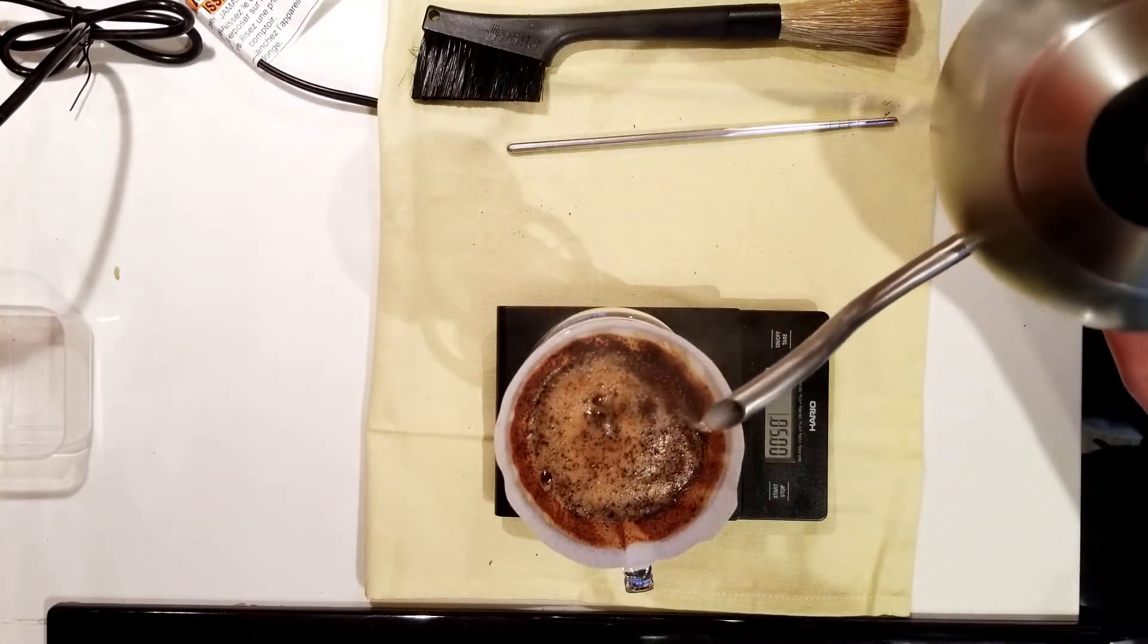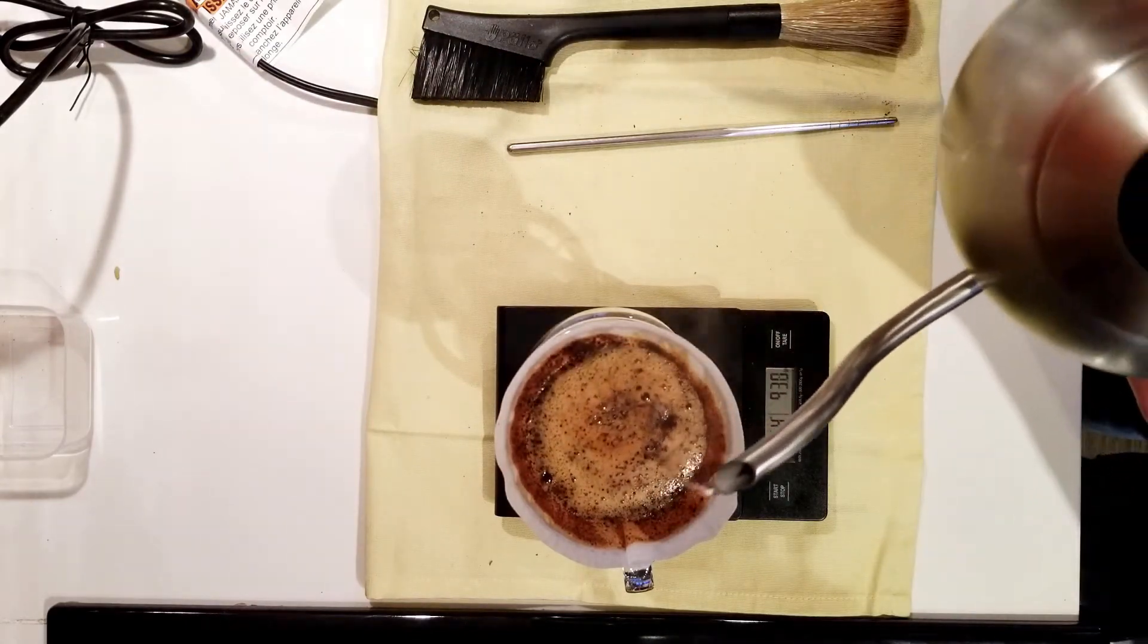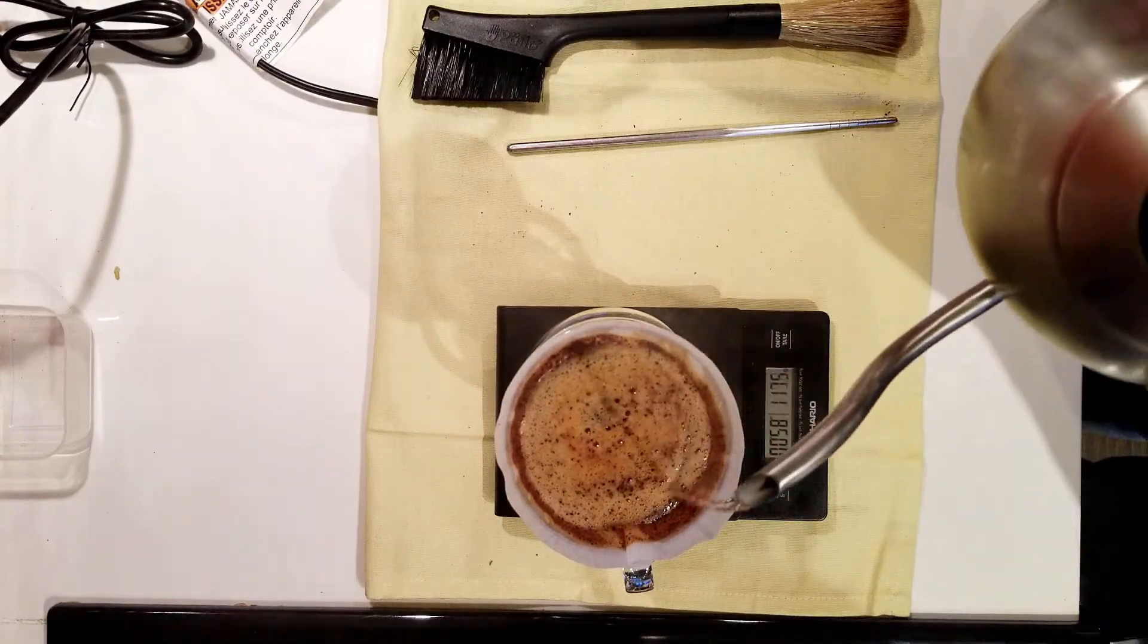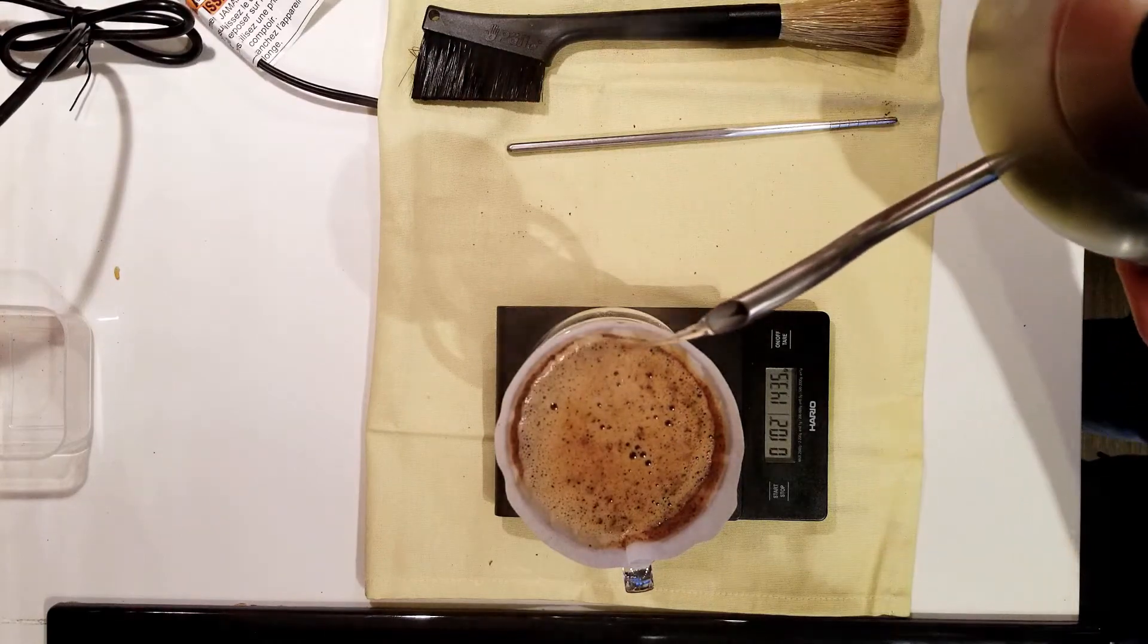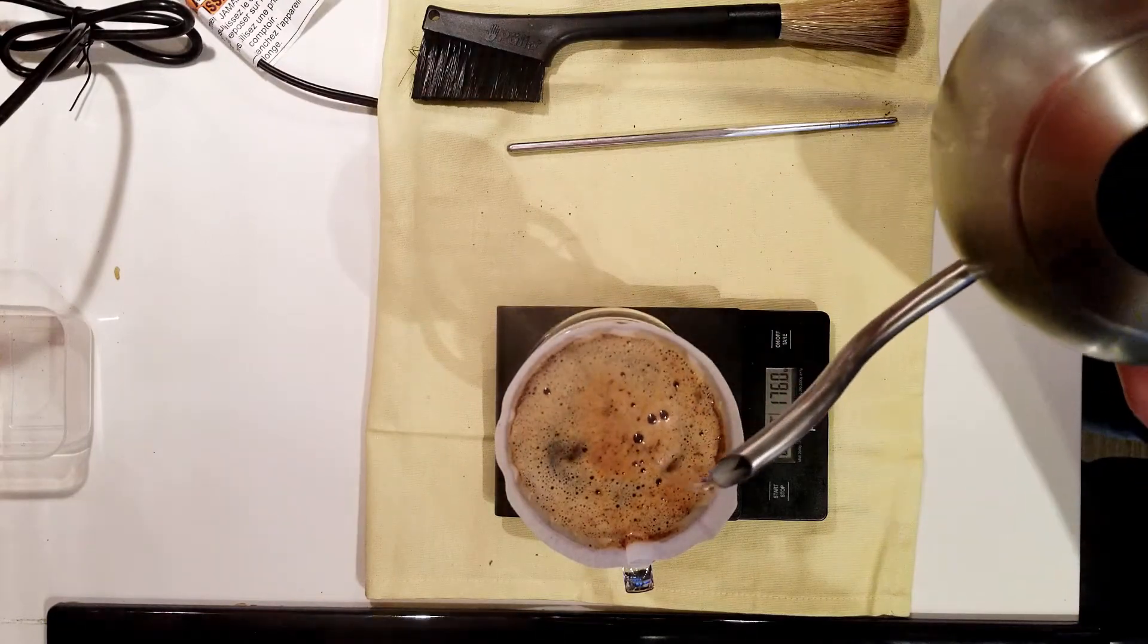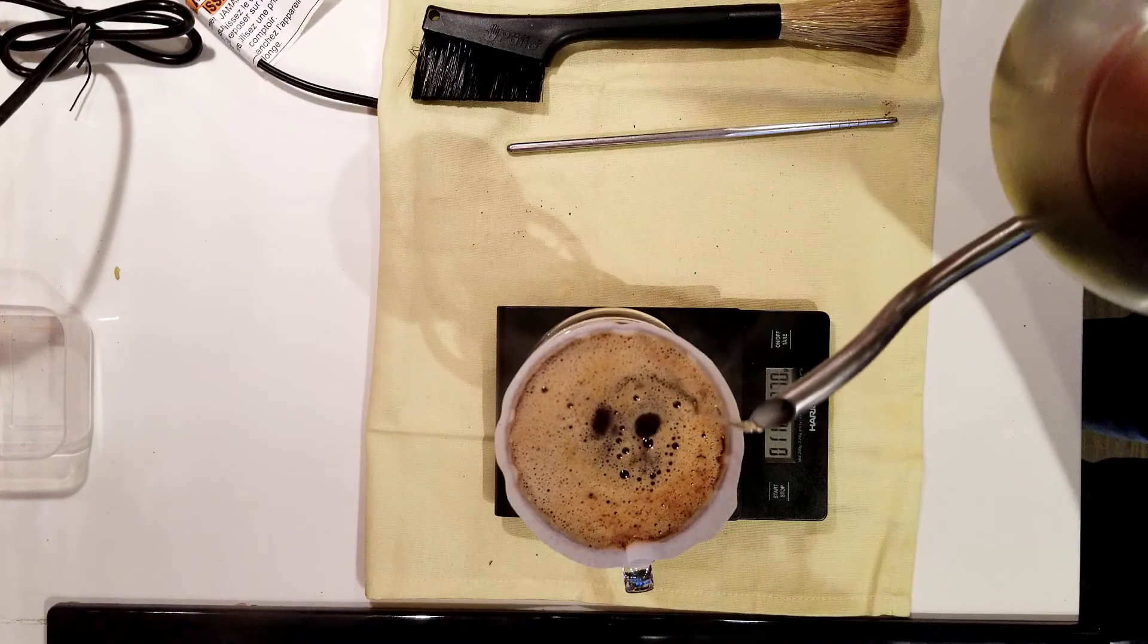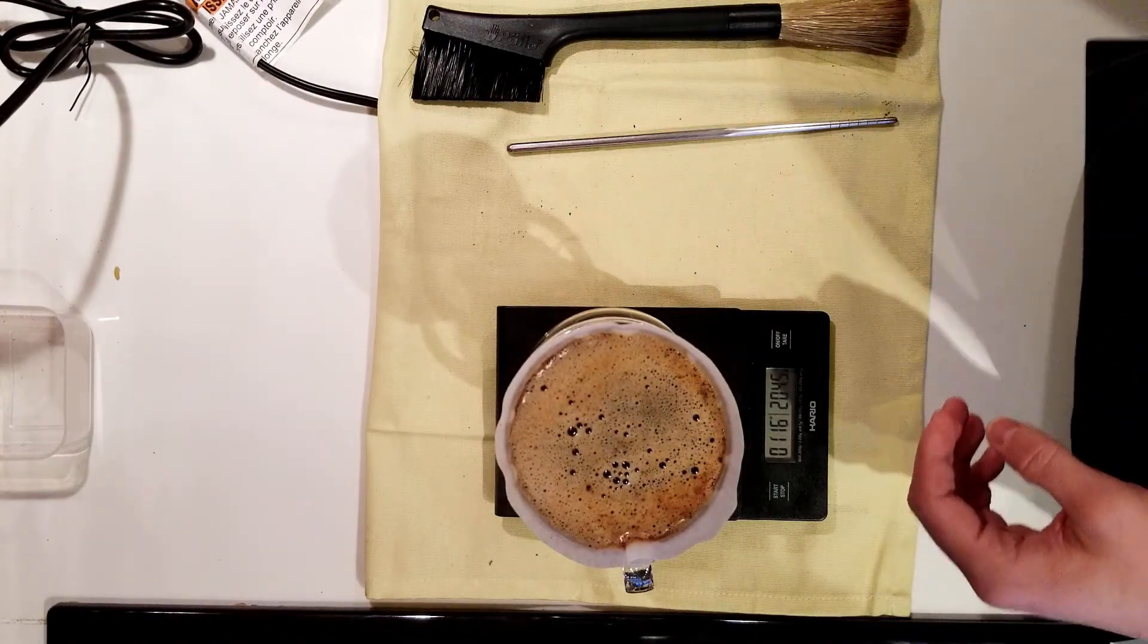Now, after we've let the bloom sit for 45 seconds, we will add the first portion of water. I'm going to go up to 200 grams on the scale and I'll be adding the water with some very important aspects in mind. You want to ensure the flow of water is as high as you can go while still maintaining a stream that drops straight down into the coffee. You also want to pour quite high but not to the point where you hear splashing on the surface of the water.